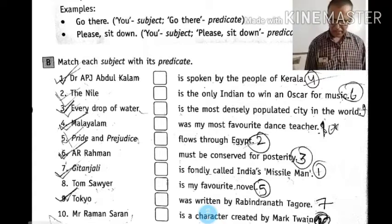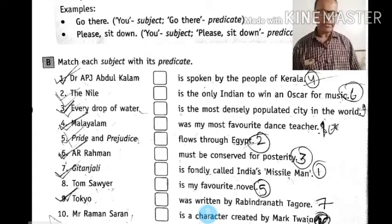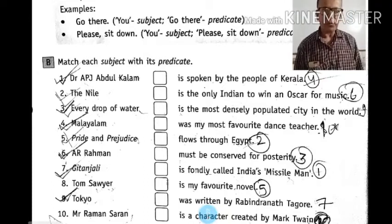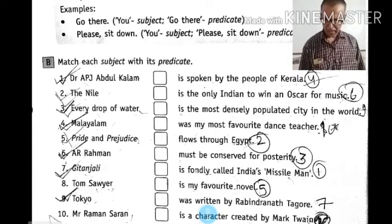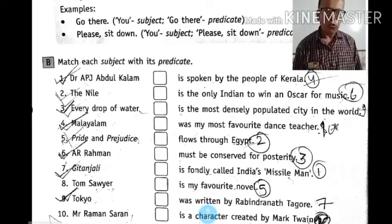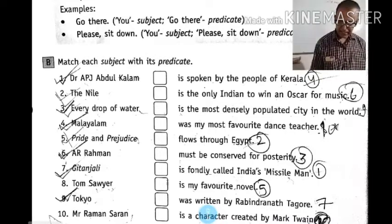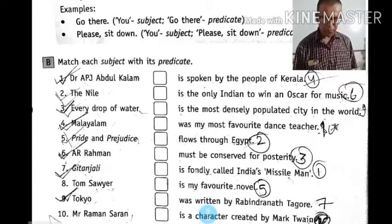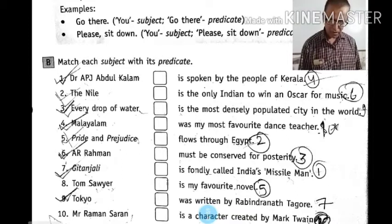The first one is Dr. APJ Abdul Kalam. Dr. APJ Abdul Kalam is fondly called India's Missile Man. Second sentence: The Nile flows through Egypt. Third: Every drop of water must be conserved for posterity.